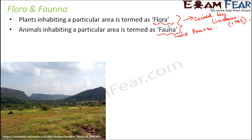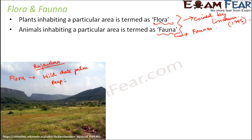Every protected area, whether a national park or a wildlife sanctuary, will have its own specific flora and fauna, because these parks are located in different areas and different climatic conditions, so the types of plants and animals which survive there are also different. For instance, taking the example of Ranthambore National Park in Rajasthan: the flora includes the wild date palm, the peepal tree, the banyan tree, and the Indian jujube — known as ber in Hindi. These common plants form the flora of Ranthambore National Park.